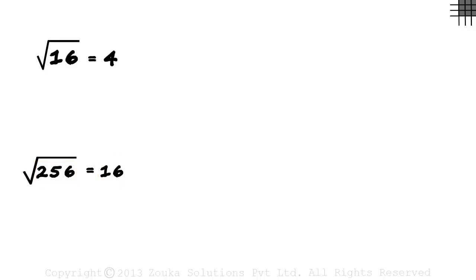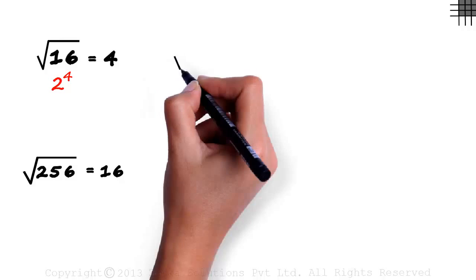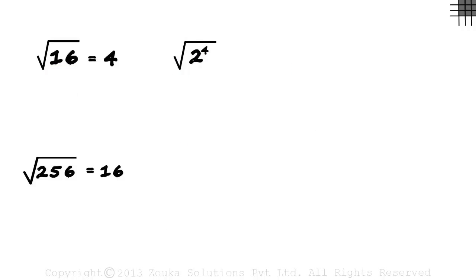Now let's try playing with these numbers. Let's try writing 16 in exponential form. We know that 16 can be written as 2 raised to 4. So the square root of 16 can be written as the square root of 2 raised to 4. It's the same thing as the square root of 16.